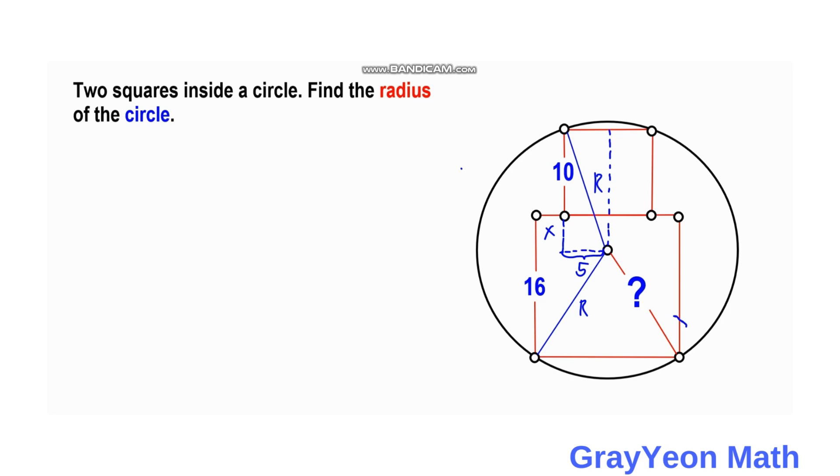We use the Pythagorean theorem for this right triangle. This is a perpendicular angle, so this is a right triangle. The radius squared is equal to (x + 10)² + 5².